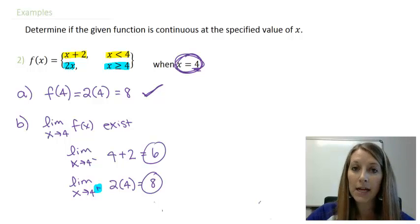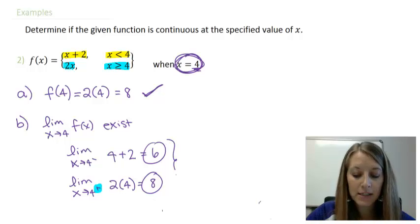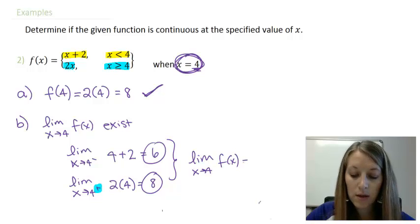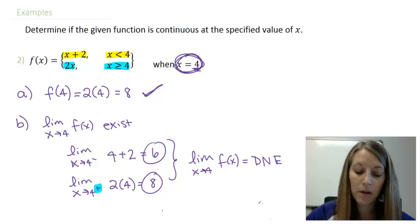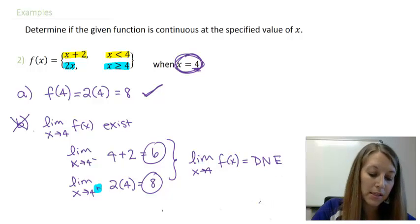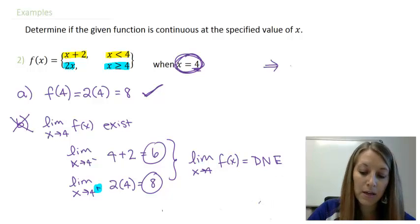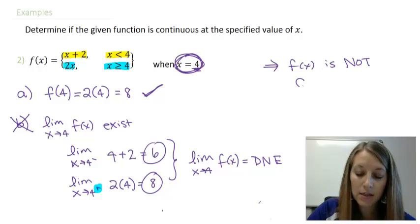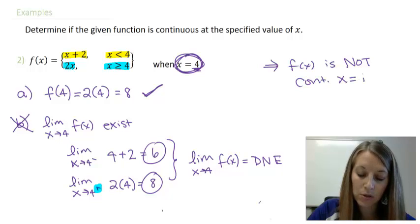The left-hand limit is 6 and the right-hand limit is 8. They do not match, so the limit as x approaches 4 does not exist. Since property b does not hold, that tells us f(x) is not continuous at x = 4.